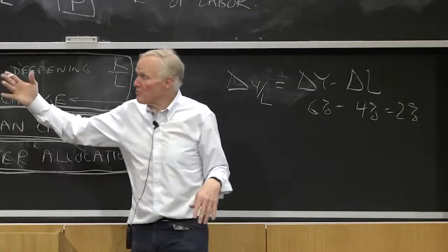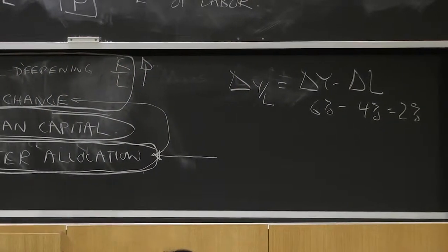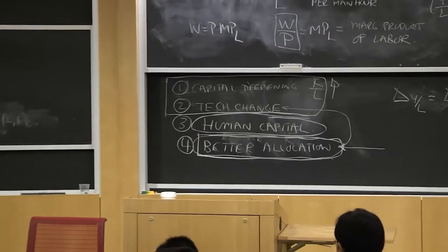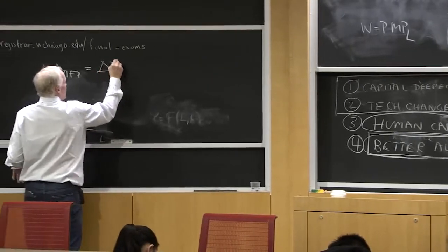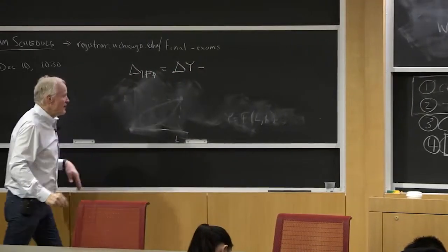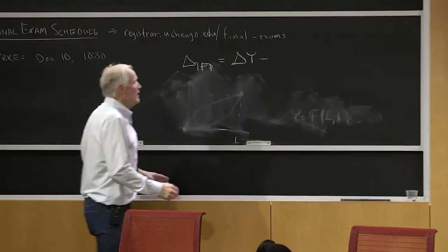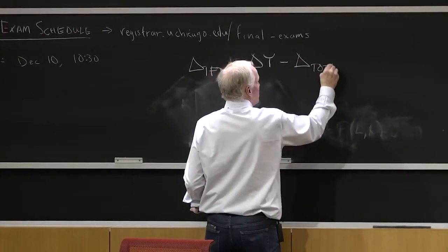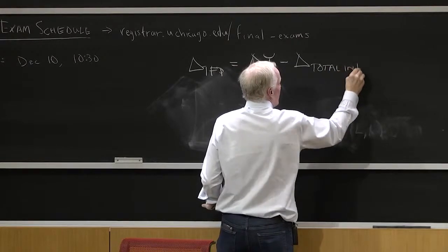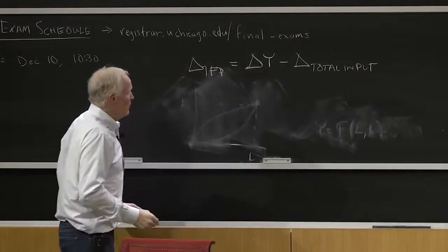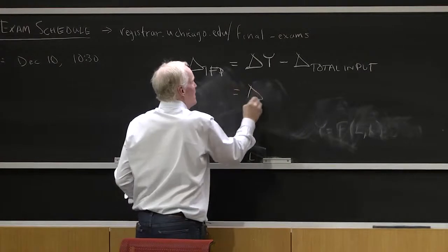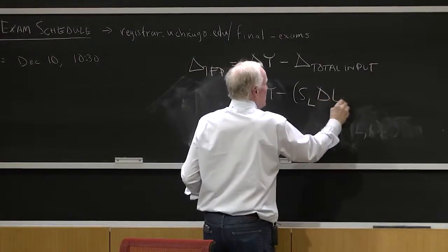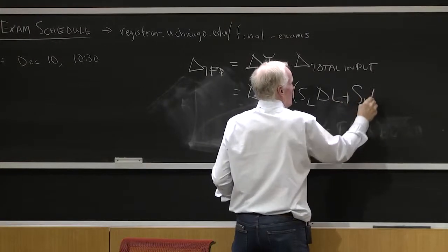Now, total factor productivity works the same way. Delta TFP is going to be measured as delta Y, but instead of subtracting off just the growth in labor, I'm going to subtract the growth in total input. And the growth in total input is going to be measured as share of labor delta L, plus the share of capital delta K.